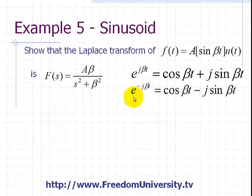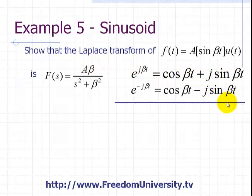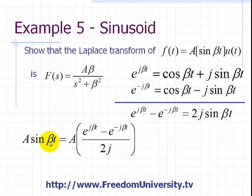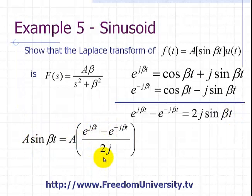You can think of e to the minus j beta t as the conjugate in polar form, and it's the conjugate in rectangular form. When I subtract the second equation from the top Euler's identity equation, on the left side I get e to the j beta t minus e to the minus j beta t. On the right side the cosines cancel out, and the two sine terms add up to 2j·sin(βt). This shows that the sine function consists of a combination of complex exponentials weighted by 2j.